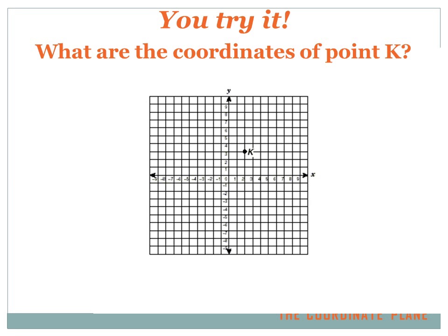Now you try it. What are the coordinates of the point K? Hit your pause button, do the problem, hit your forward button, and you'll see the answer. The point K is at 2, 3. It's at x positive 2, and y positive 3. So it's 2, 3.